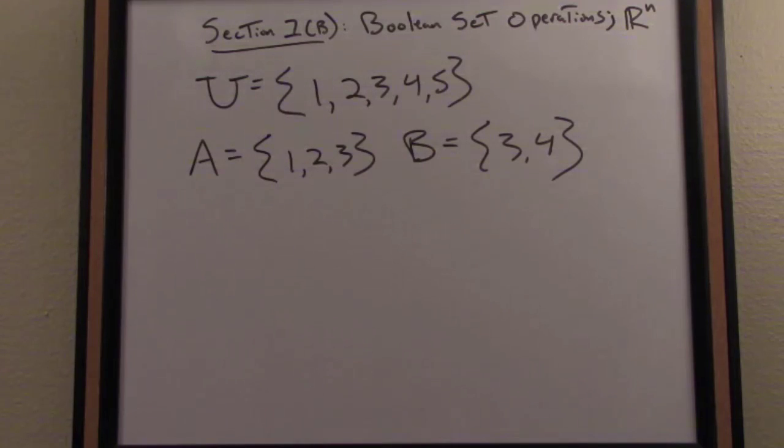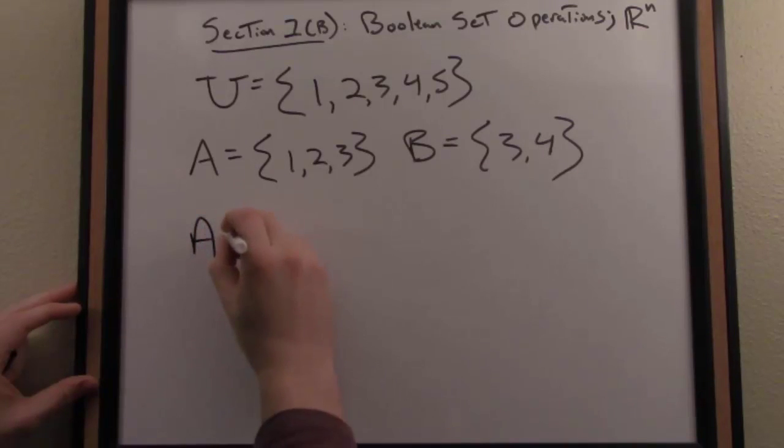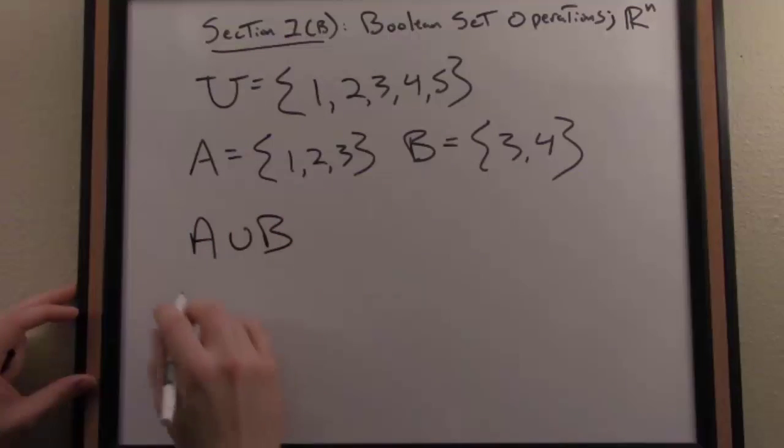So what we want to do here is define our first Boolean operation. It's a binary operation. By the way, Boolean comes from George Boole. It's named after George Boole, who was an English logician. So we will define our first operation here, which is called the union.